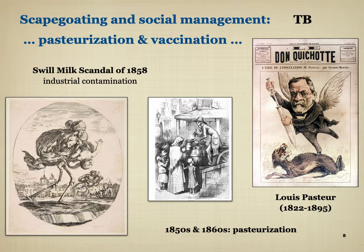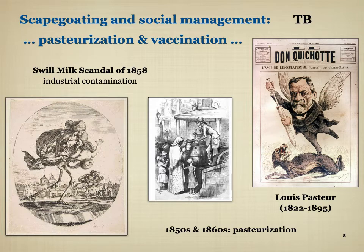One solution to swill milk was pasteurization. By the late 19th century, people drew upon Louis Pasteur's research showing that if you slightly heat the milk, the bacteria and microbes in it will die. Pasteurizing milk was a way to sell industrial milk without risk. But even with this process, there was continued concern about how you fight these invisible microbes, and how much the fault lay with industrial production that was contaminating foods at a large scale.